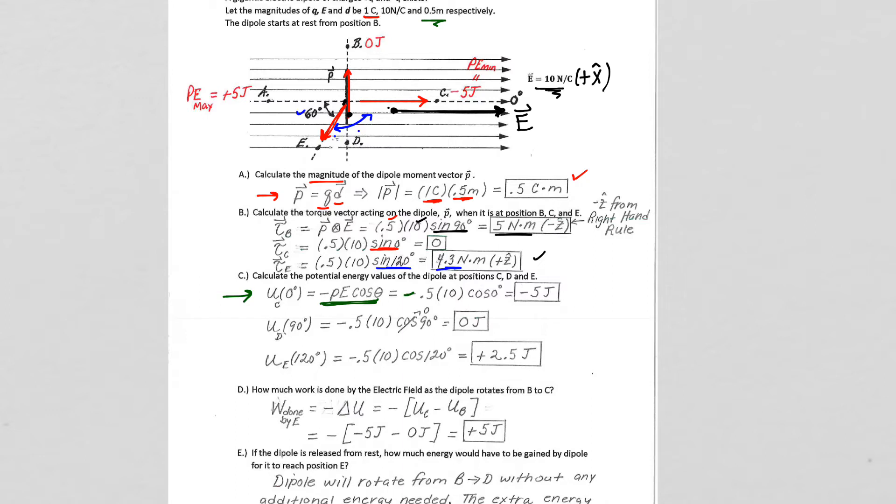So negative P, we calculated up here, was 0.5. The electric field is 10. Cosine of 0 degrees, because we're at position C, so cosine of 0 degrees, so we get negative 5 joules. At 90 degrees, negative P E cosine theta. Cosine of 90 is 0. That gives us our 0 joules.